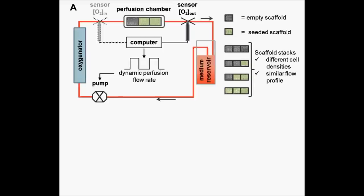The aim is not to use the difference in oxygen concentration over the perfusion chamber as a measure for cell number but instead we make use of a dynamic flow rate.